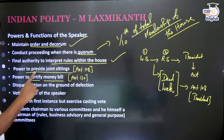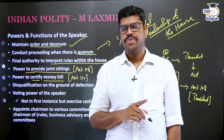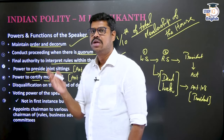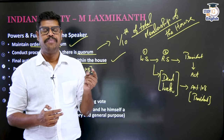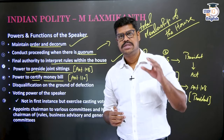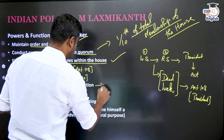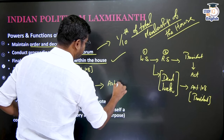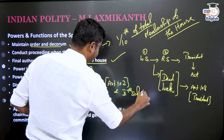It is also the power of the Speaker to disqualify members of parliament from the Lok Sabha on grounds of the anti-defection law. For all other grounds of disqualification, the disqualifying authority is the President of India on the recommendation of the Election Commission of India. But when it comes to anti-defection law, this power falls under Article 102 as well as the 10th Schedule of the Constitution.